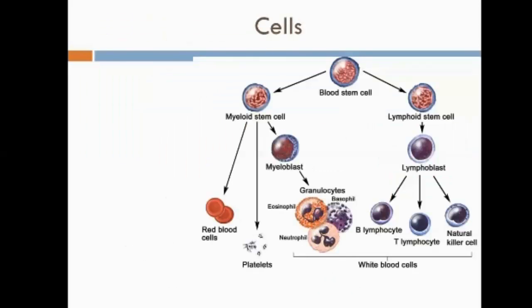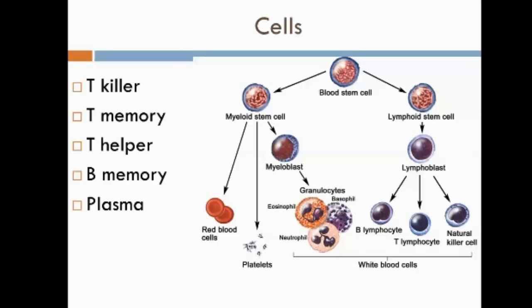We've come a long way from just saying the immune system is made up of white blood cells to fight off infections. These are all of the white blood cells that play important roles in this process.